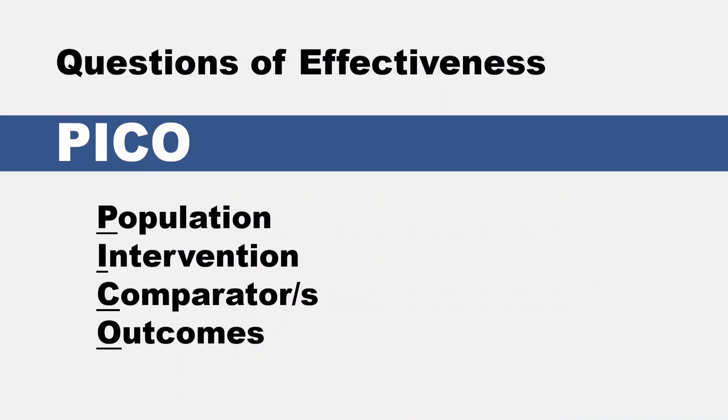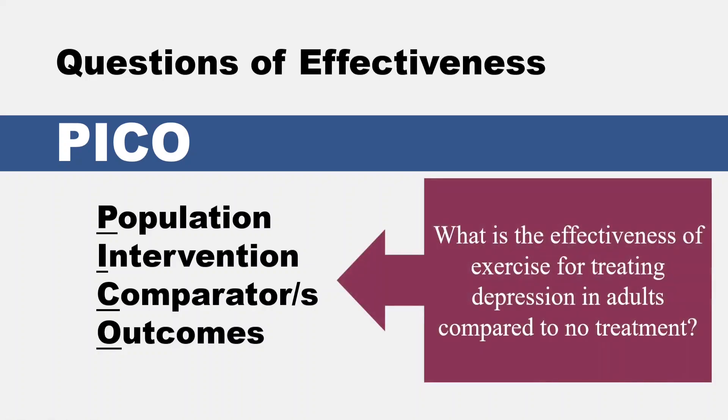The first one is for questions of effectiveness. It's the well-known PICO: population, intervention, comparator, and outcomes. A sample topic might look like this: 'What is the effectiveness of exercise for treating depression in adults compared to no treatment?' I urge you to stop the video here and identify each element of this question, matching it up to the elements on the left. But I'm going to keep going.